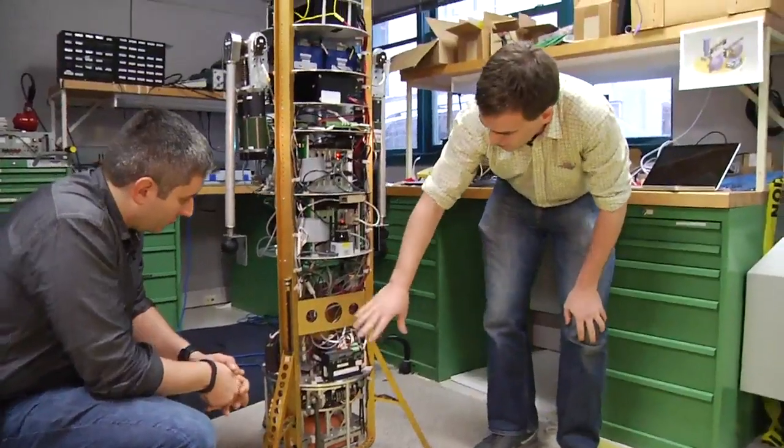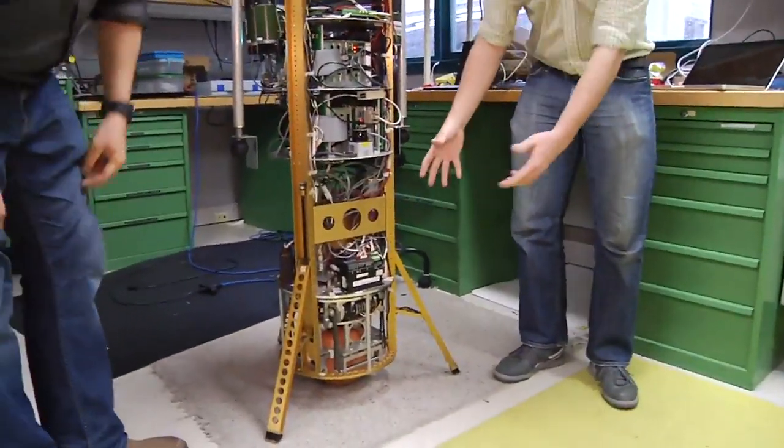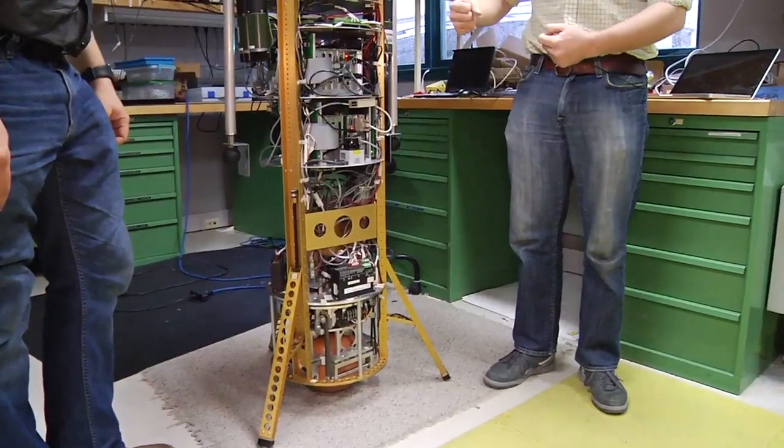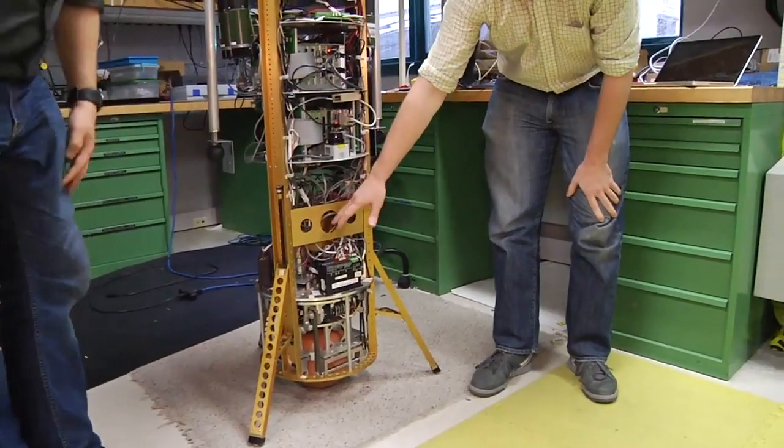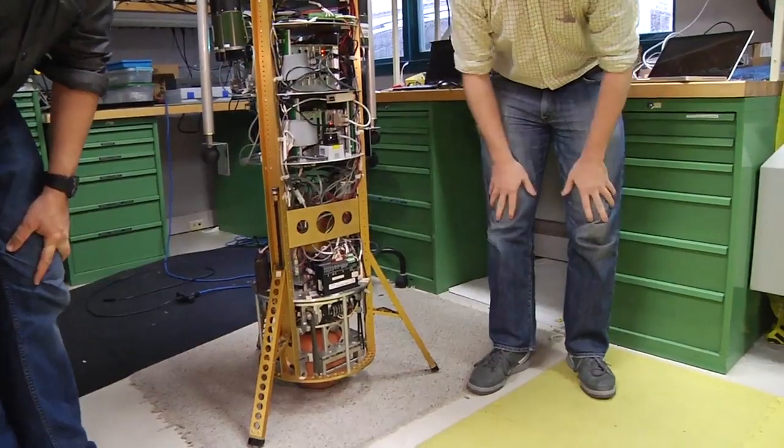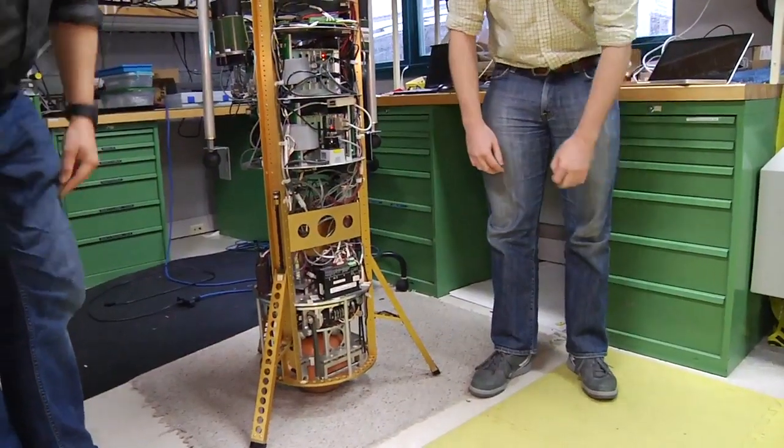Here we've got our motor drivers and our motors for the legs. Our legs give us a statically stable configuration so that we can charge. But when we're in operation we retract them. Right in here we've got our inertial measurement unit, probably the most important piece of the whole robot because it tells us which direction gravity is pointing.